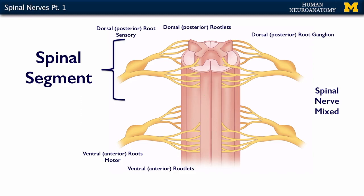The modalities are important. When we think of a spinal segment, we think of one spinal nerve and then all of its dorsal and ventral rootlets, roots, and then the spinal nerve. The dorsal part of the spinal cord gray is sensory and the ventral is motor, so the dorsal rootlets and root are sensory, the ventral rootlets and root are motor, but they come together at the spinal nerve. So the spinal nerve is mixed — sensory, motor, and then mixed.